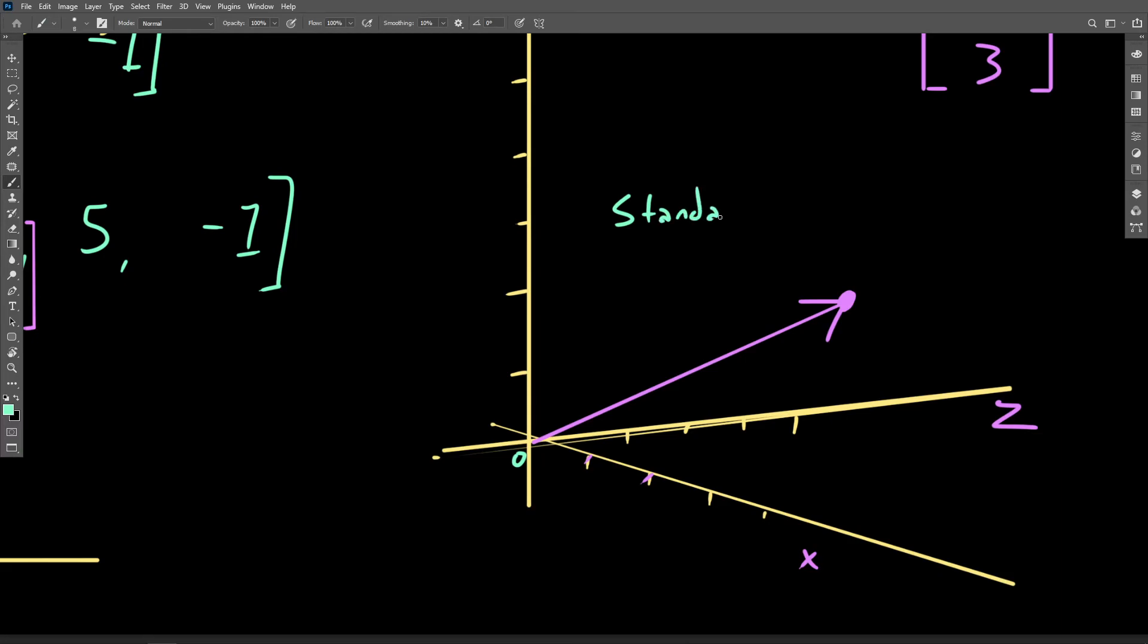These vectors are said to be in standard position because they all start at origin. Now mathematically, any vector operation will consider its operand vectors to be in standard position, but intuitively, we understand that vectors can exist anywhere in the coordinate space.